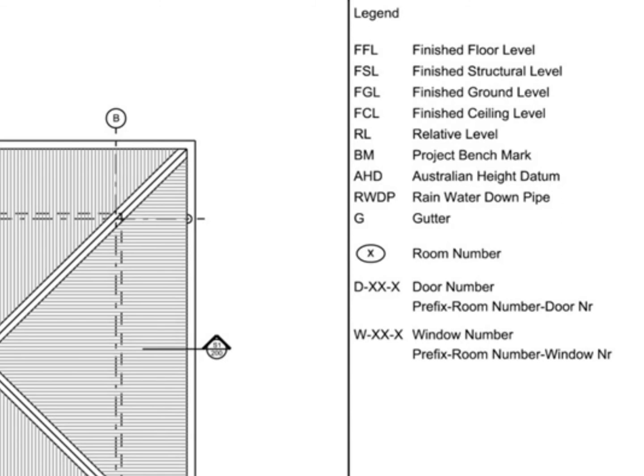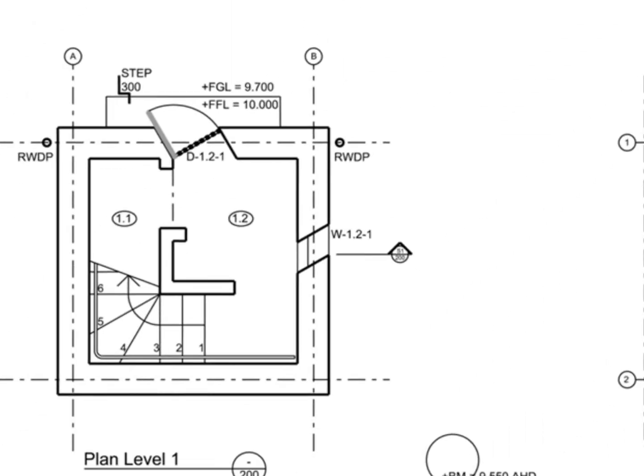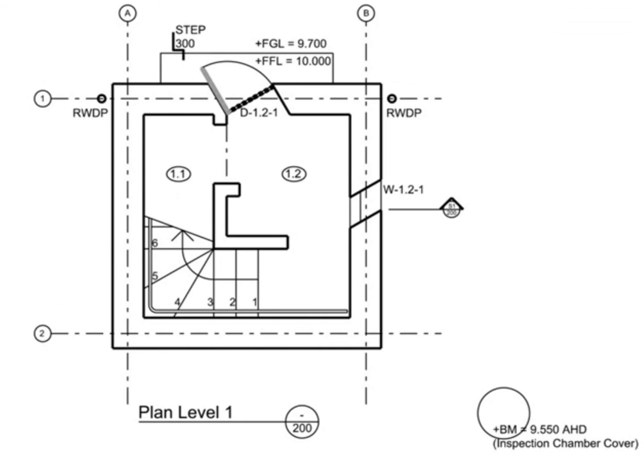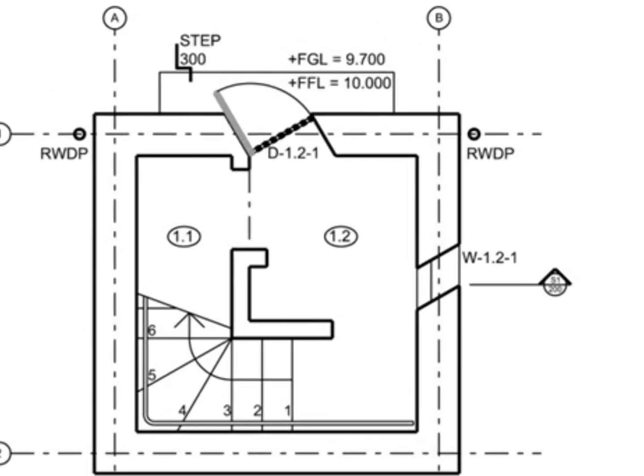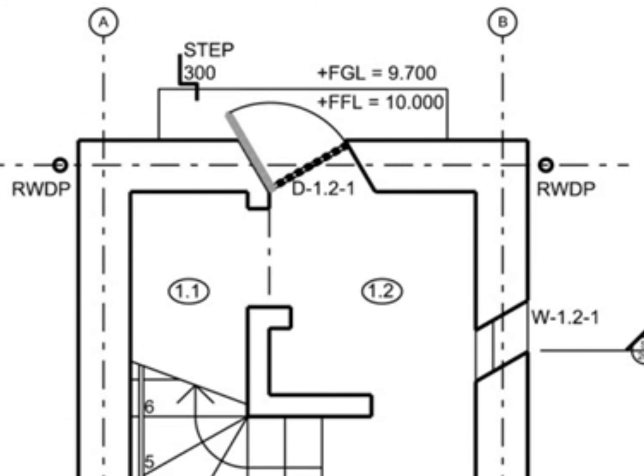Many abbreviations relate to height information such as finished floor level and ground levels, written in metres usually to two or three decimal places. We have also shown the location of the project benchmark and its height. For most contract drawings we would also number each room with a unique number — typically referenced by its level and then its sequential number. Doors and windows would then key off the room numbering system so that each element could be identified separately.